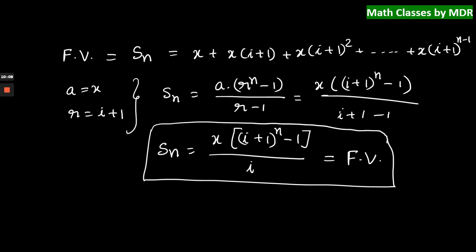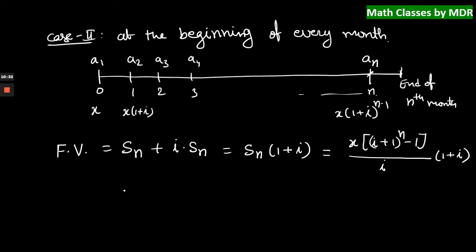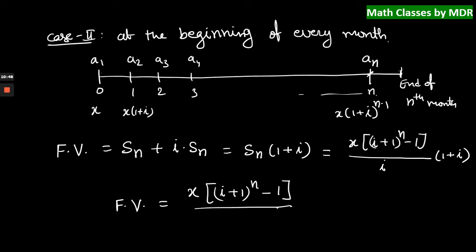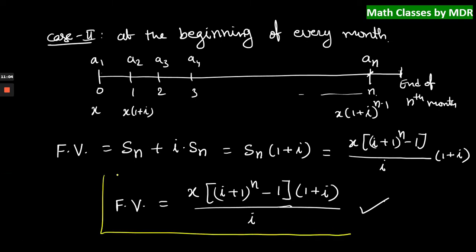What is Sn? It is X into [(i+1)^n - 1] divided by i. So the future value for Case 2 is X into [(1+i)^n - 1] divided by i, multiplied by (1+i). This is the future value when deposits happen at the beginning of every month. These are the two cases we see for problems based on superannuation.